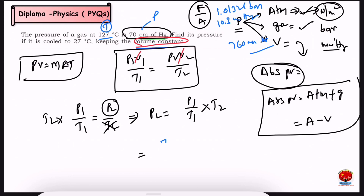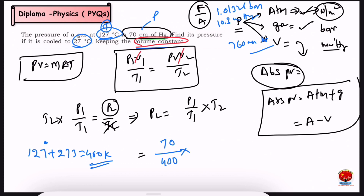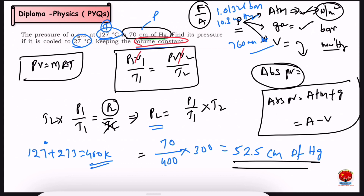We have P1 equal to 70 cm of Hg. The initial temperature T1 is 127°C, which must be converted to Kelvin (127 + 273 = 400 K). T2 is 27°C, which equals 300 K. We substitute into P1/T1 = P2/T2 to find P2. The pressure P2 will be in units of cm of Hg, Nm², or Pascals.